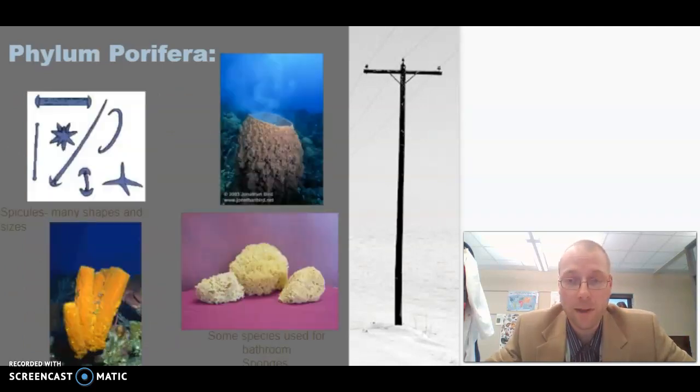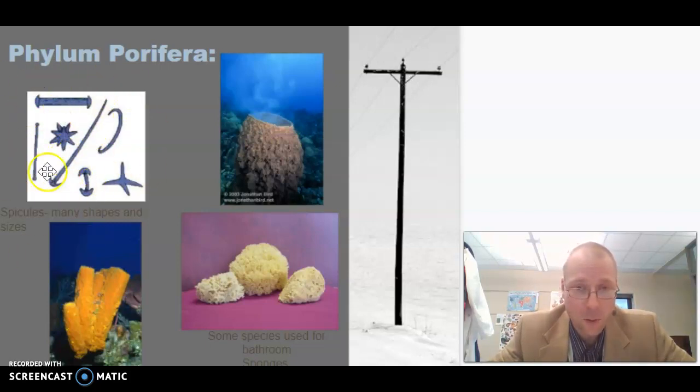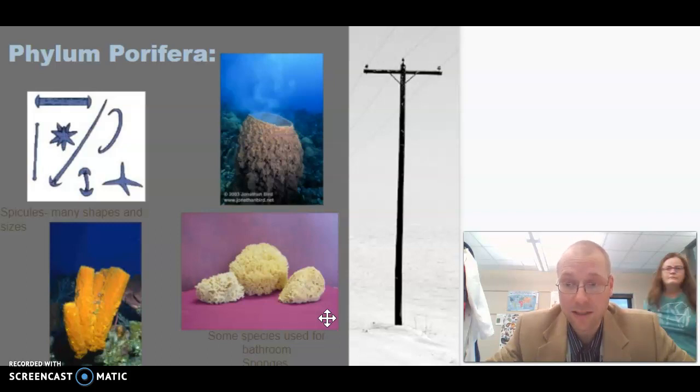Here are a few pictures of porifera, some sponges. This is a drawing of some of the different spicules that make them up, some of the bony structures. You have a giant barrel sponge right here. You have some bathroom sponges, and bathroom sponges historically were the skeletons of real sponges.